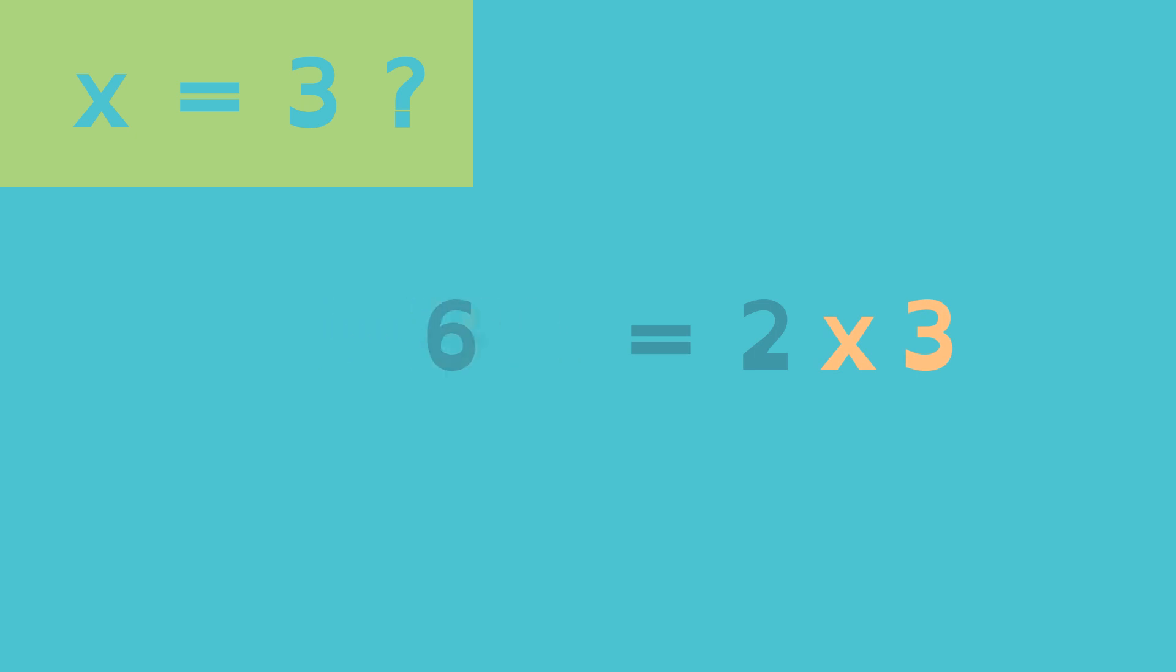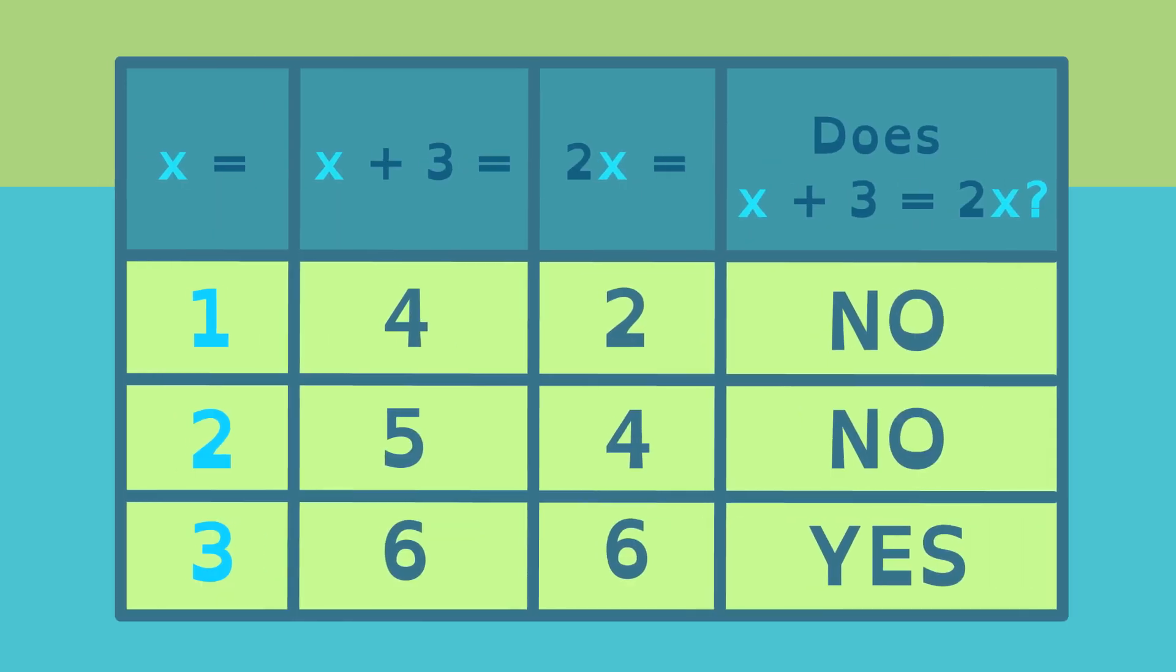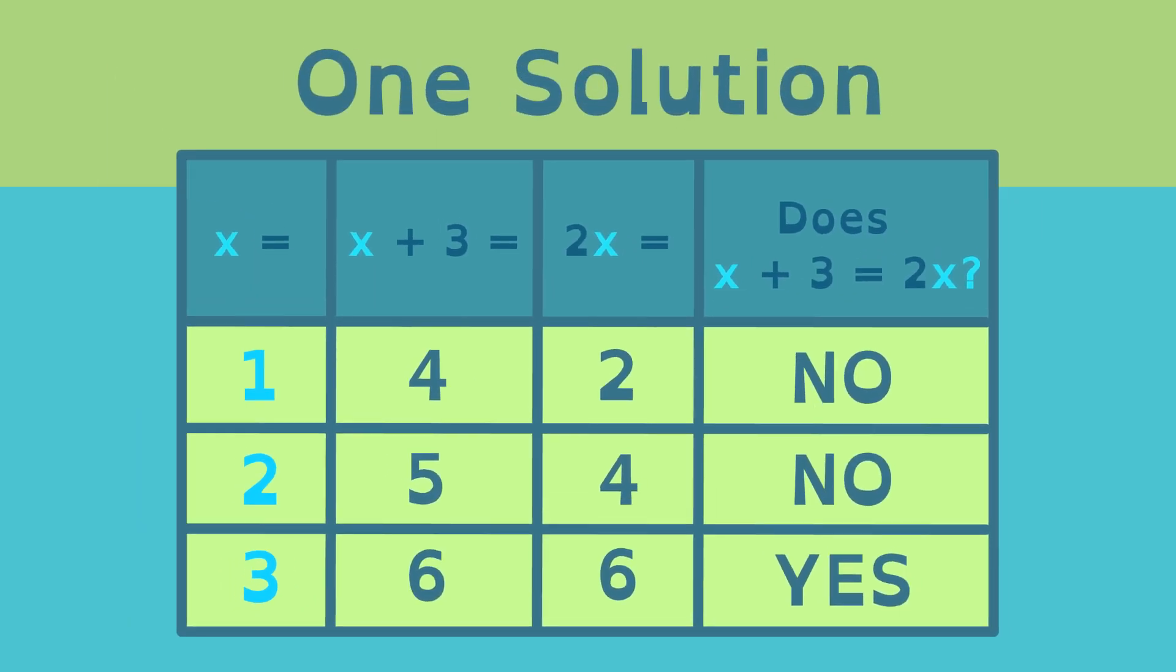3 plus 3 is 6. 2 times 3 is also 6. x equals 3 is the solution to this linear equation because it makes the equation true. This particular equation has only one solution, 3.